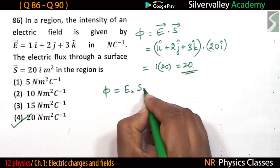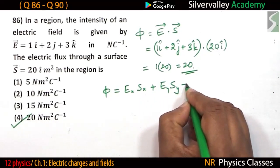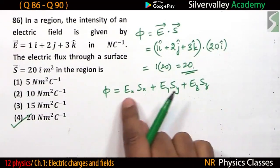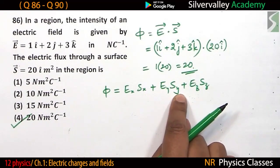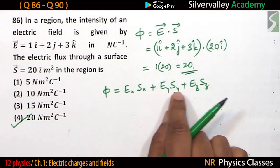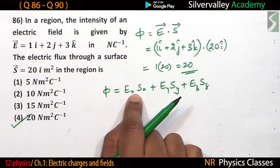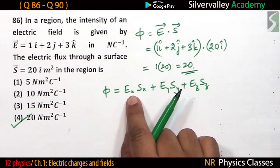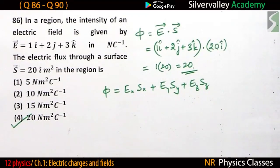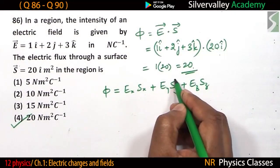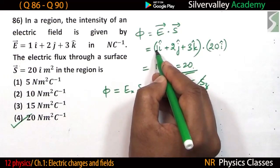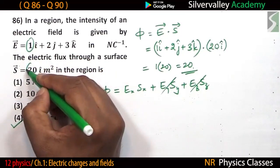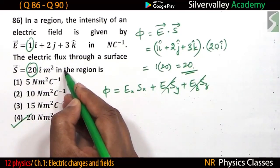The expression for flux is Ex·Sx plus Ey·Sy plus Ez·Sz. This concept comes from the dot product of vectors, introduced in the 11th standard chapter on motion in a plane, and further explained in the work, energy and power chapter. Since there is no Sy and no Sz, the flux equals Ex·Sx equals 1 times 20, which is 20. For such problems, identify the matching components and multiply directly.